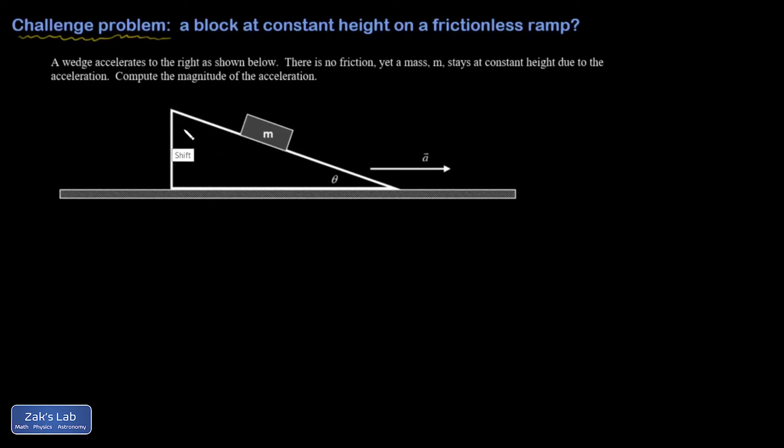So because it has exactly the same height through the entire problem, that inspires me to use a horizontal vertical coordinate system instead of the usual tilted coordinate system that you might see for a lot of ramp problems. So my height is going to be constant. In other words, my y acceleration for this xy set of axes is going to be 0, and that should be useful.